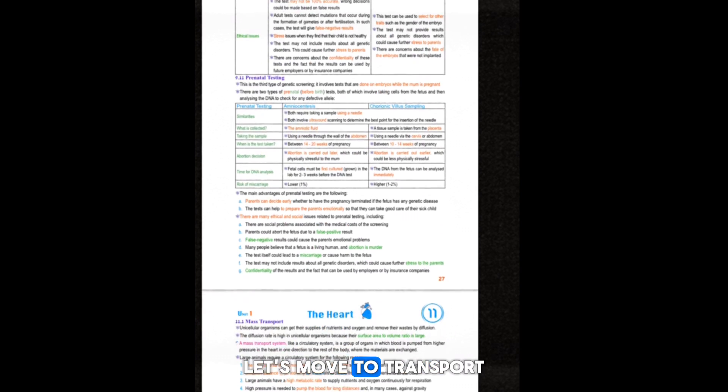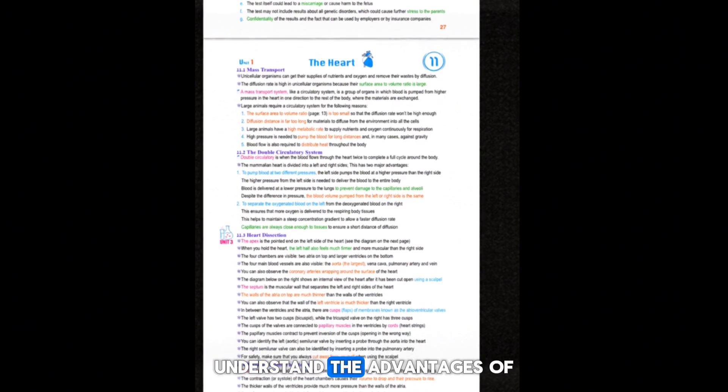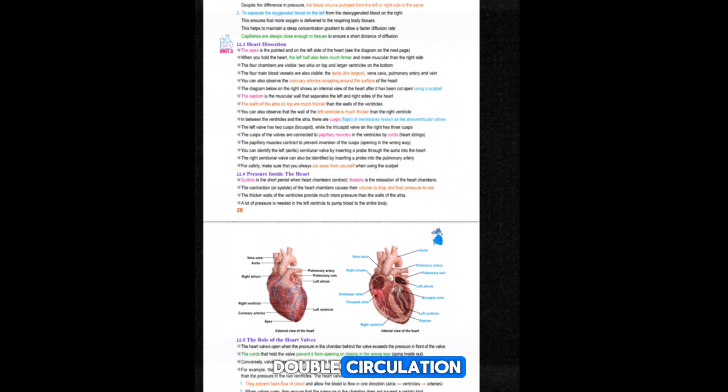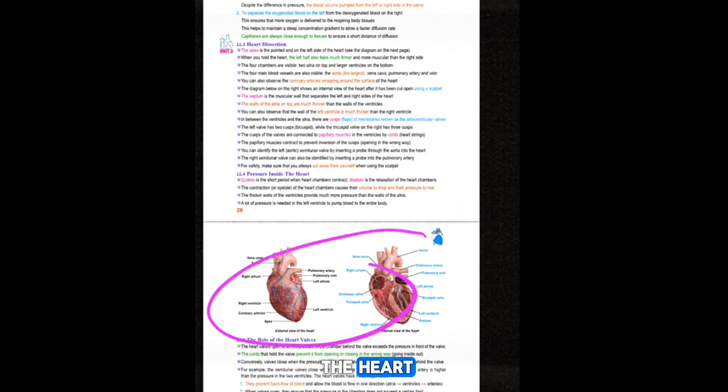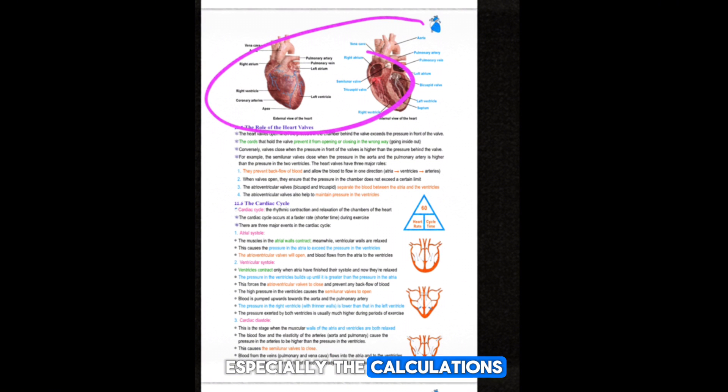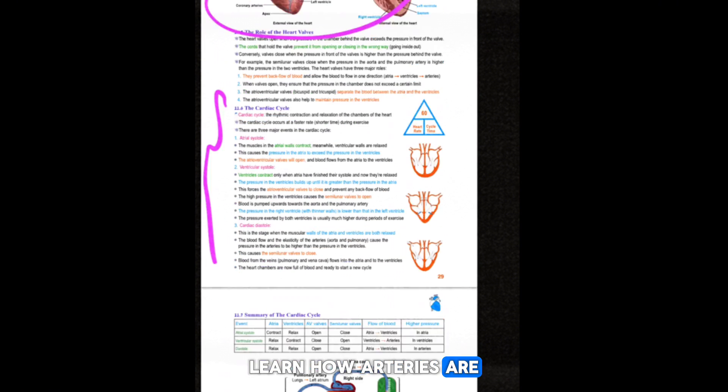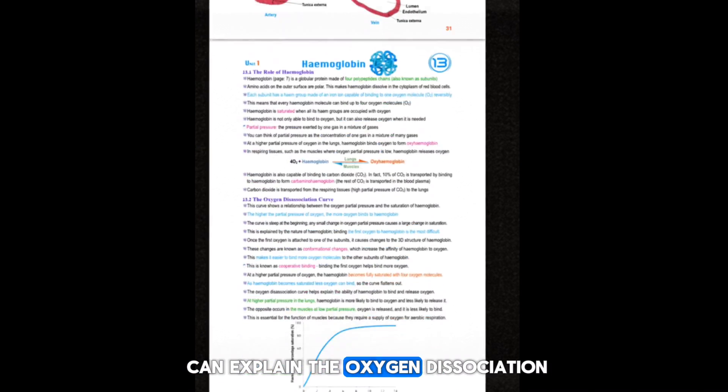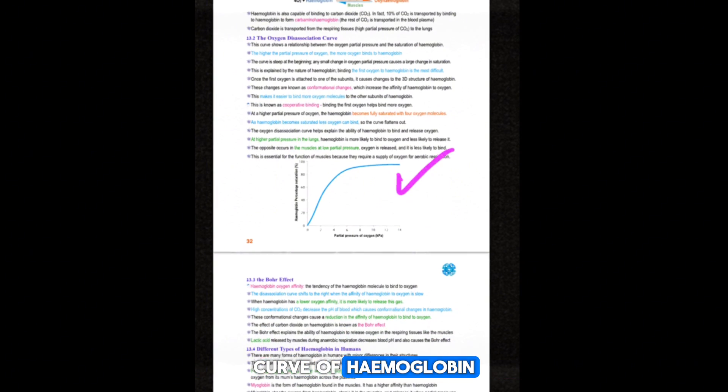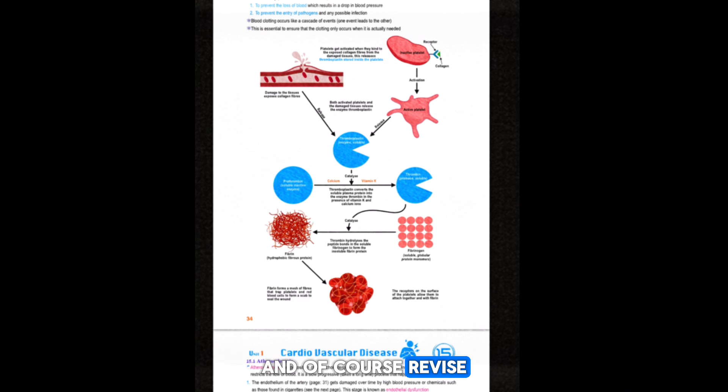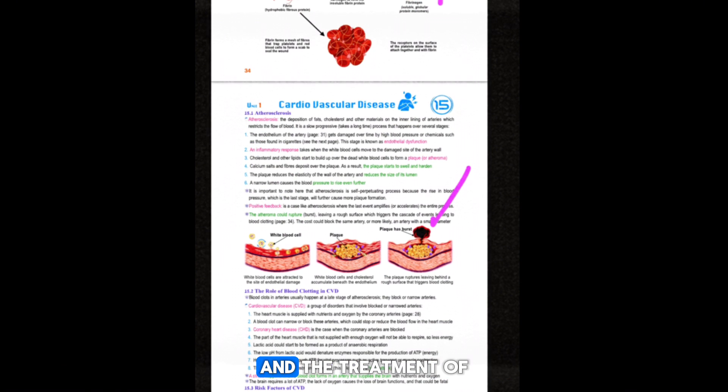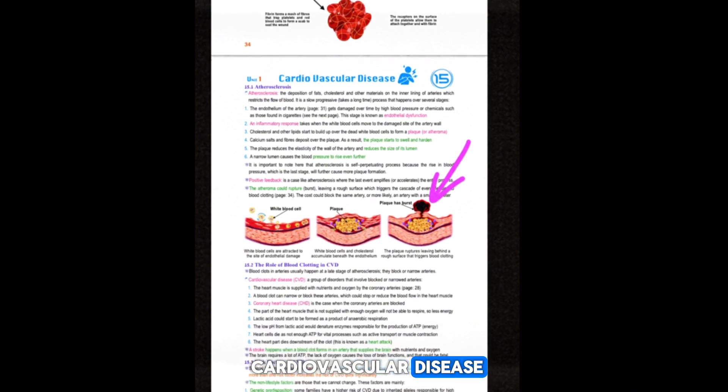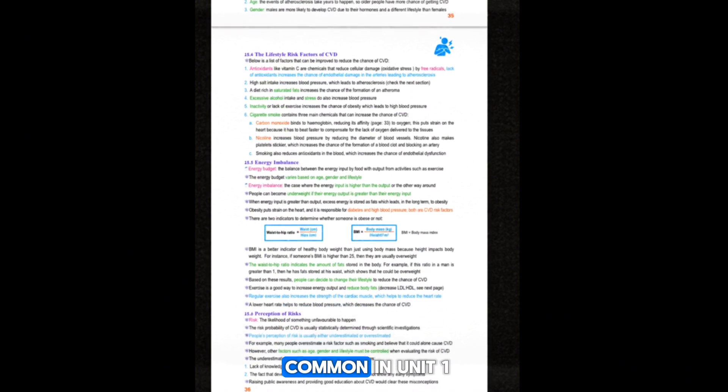Finally, let's move to transport and circulation. Understand the advantages of double circulation. Study the structure of the heart and the cardiac cycle really well, especially the calculations. Learn how arteries are adapted for their function, and make sure you can explain the oxygen dissociation curve of hemoglobin. And of course, revised blood clotting, atherosclerosis, risk factors, and the treatment of cardiovascular disease. These are all very common in Unit 1.